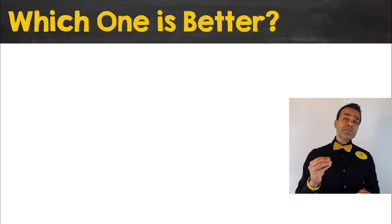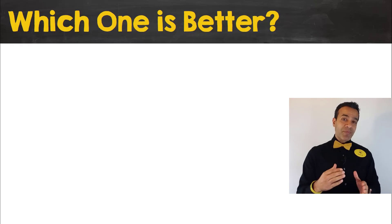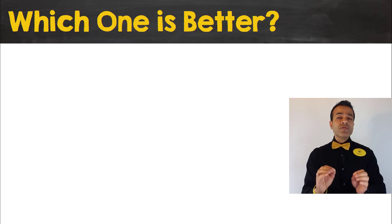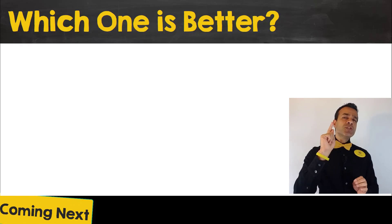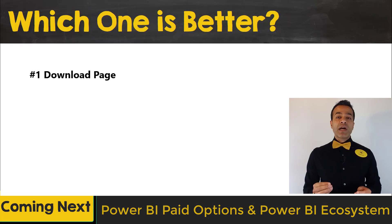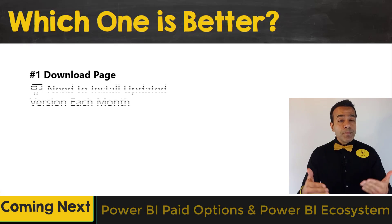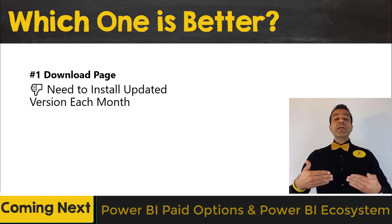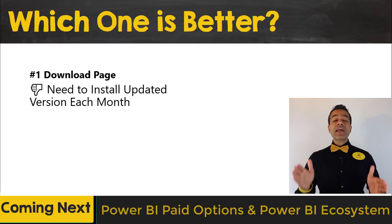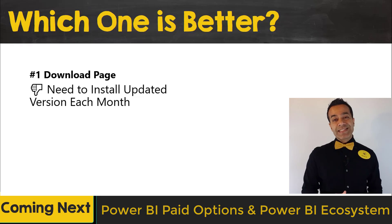At this point you must be asking: which is the better method? I have my preferred method and I'll share it, but I'll give you the trade-offs of both approaches. Using the first method — getting Power BI Desktop from the download page — you would need to install an updated version each time it is released by Microsoft, and that happens like clockwork every single month, loaded with new and exciting features.